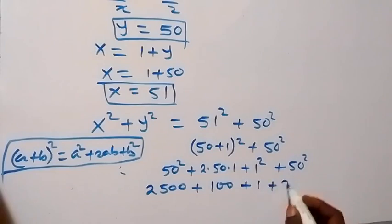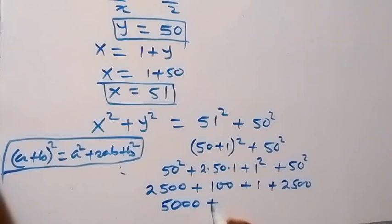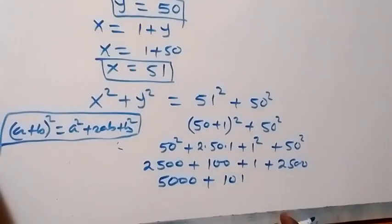So 2,500 + 2,500 gives us 5,000, then plus 100 plus 1 equals 101. When we add these together, this will give us 5,101. So this